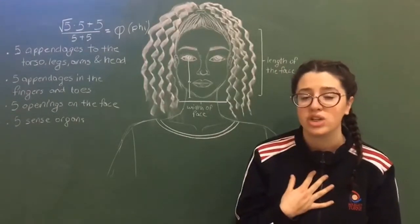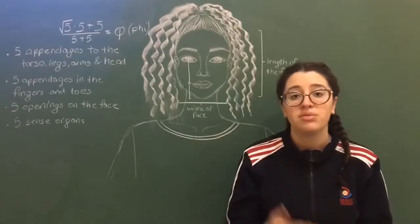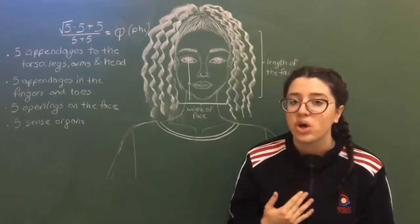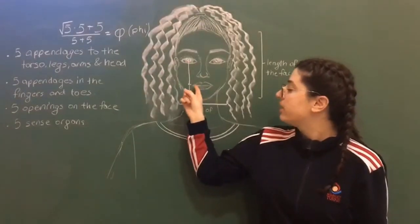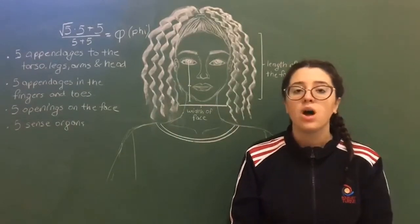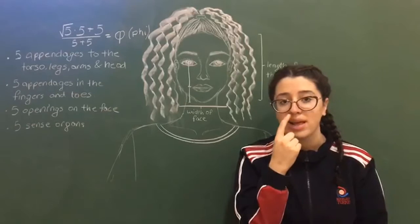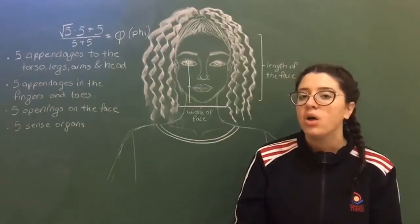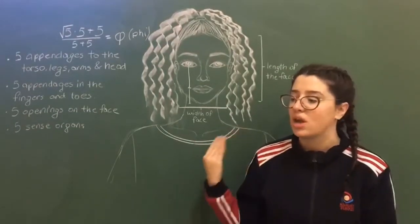We can find the golden ratio in lots of proportions in our head. For example, if we divide the height of our head by the length of our head, it is the golden ratio. If we divide the distance from the pupil of the eye to the lips and from the lips to the chin, we also have a golden ratio. If we divide the length of the mouth by the width of the nose, it is also a golden ratio.